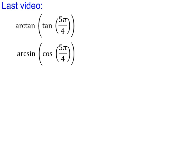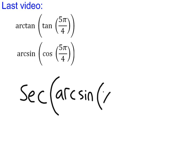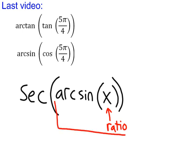Our first example is going to be secant of arc sine of x. The first thing I want to point out is that this is different than in the last video. In this case, x is a ratio, and I know that because I can only take arc sine of a ratio. It makes no sense to take arc sine of an angle.